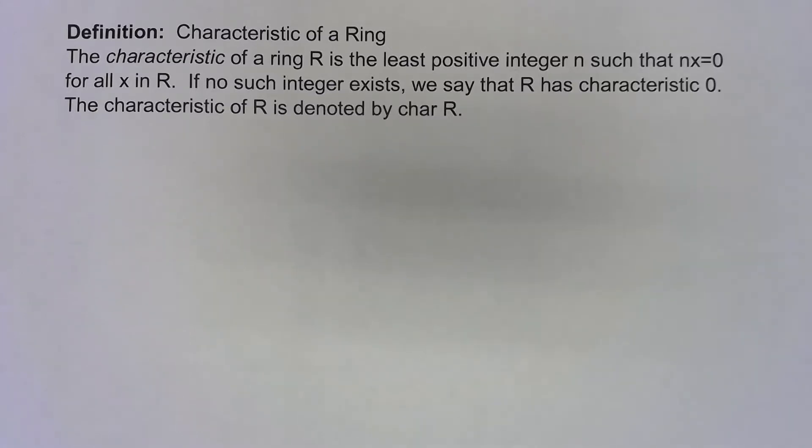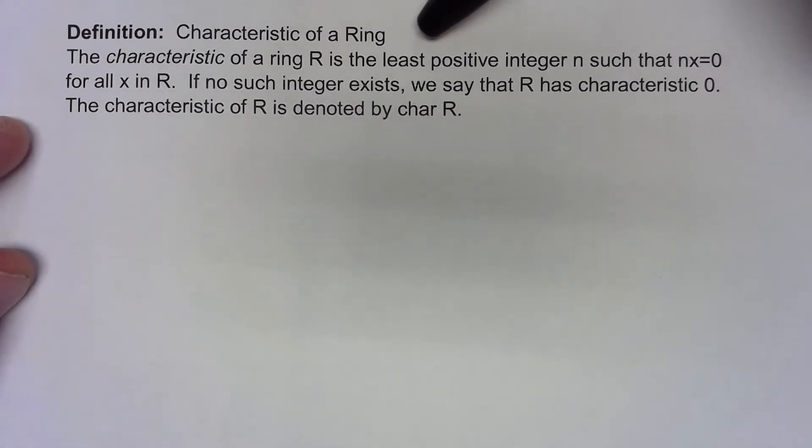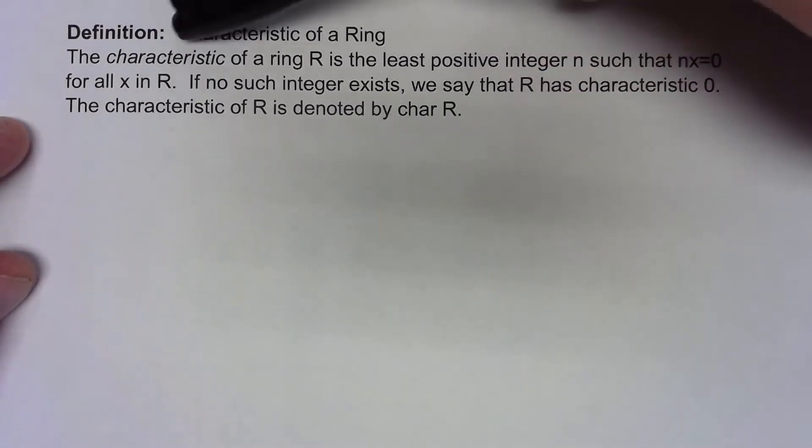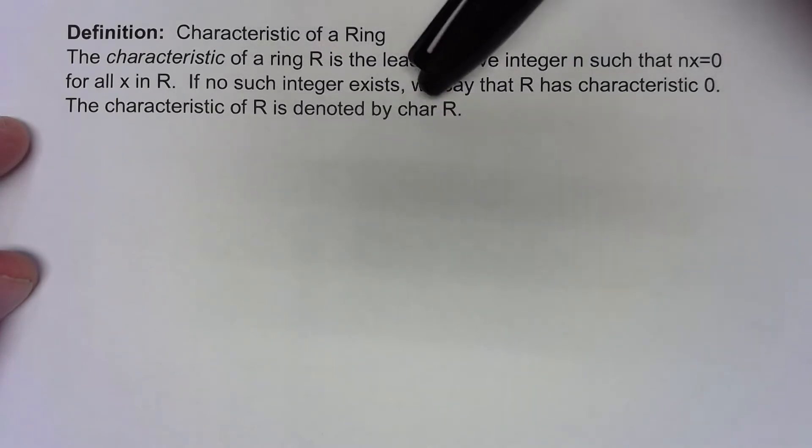Let's define the characteristic of a ring. The characteristic of a ring R is the smallest positive integer n such that n times x equals 0 for all x in R. So it's the same n multiplied by any element in the ring gives us 0. It's possible, in fact fairly likely, that no such integer exists, and then we say that the ring has characteristic 0. In general, we denote the characteristic of ring R by char R.